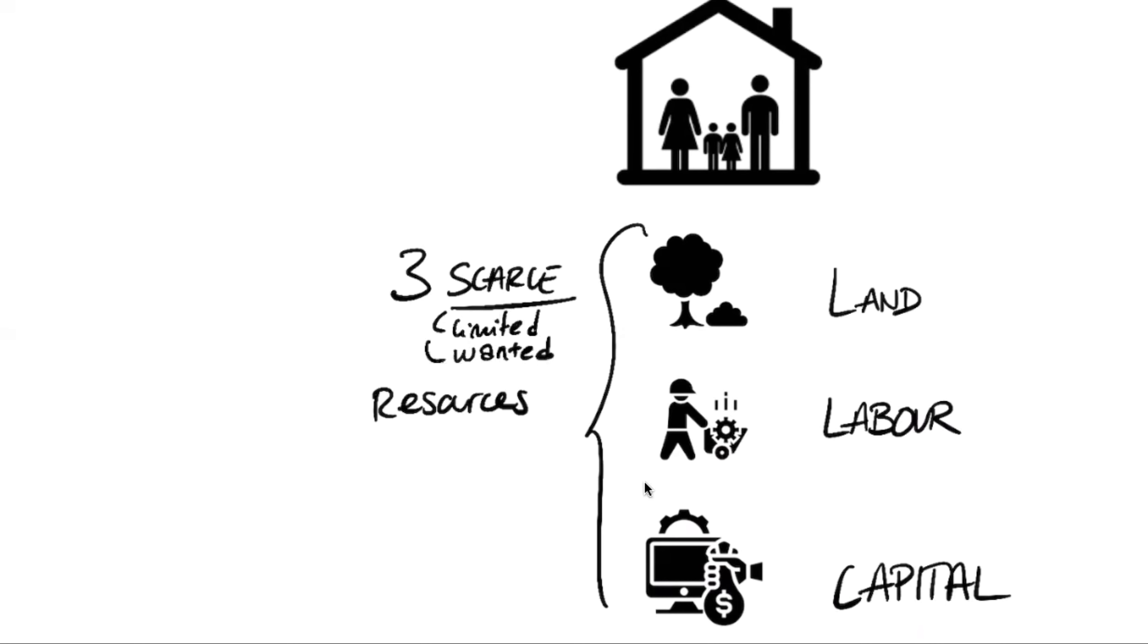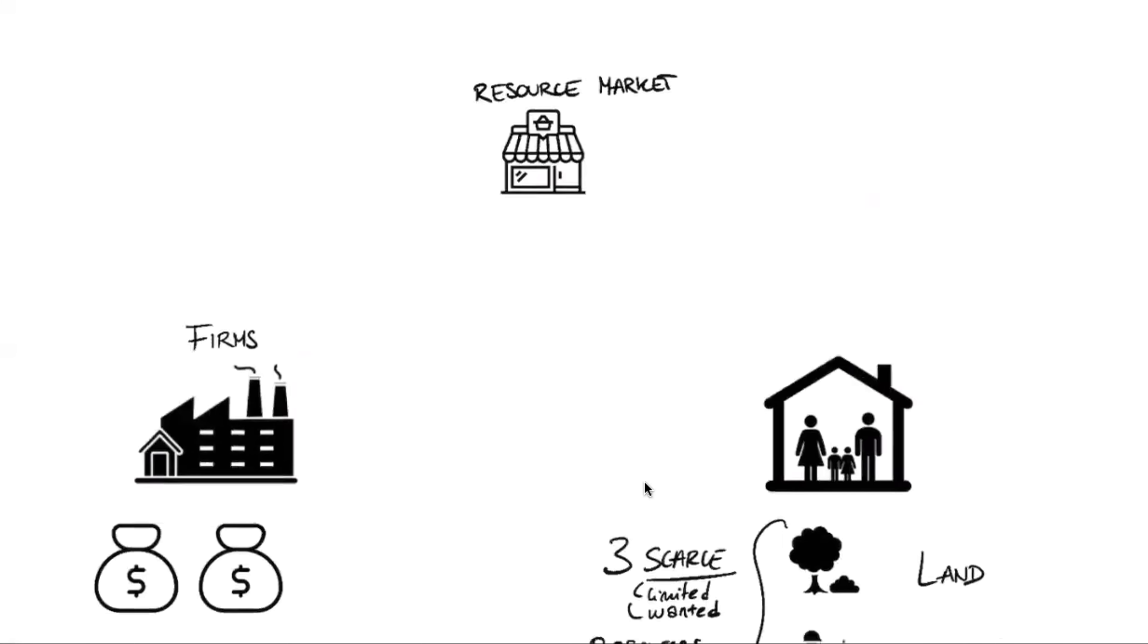And so the first step in our circular flow is the fact that these households, like all the households, they bring in the resource market, they bring factors of production. They bring land, they bring labor, that I will write just L, and capital.